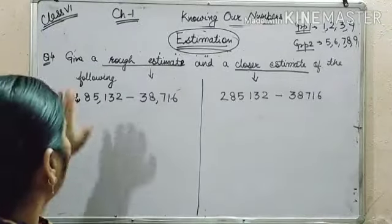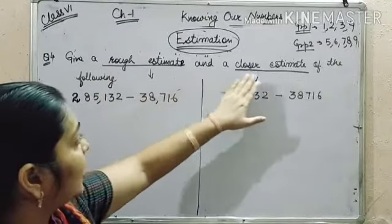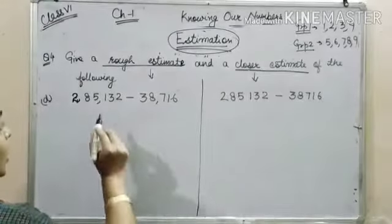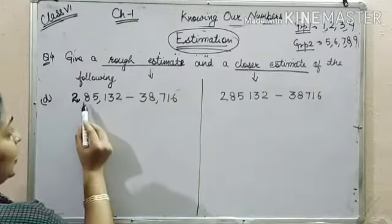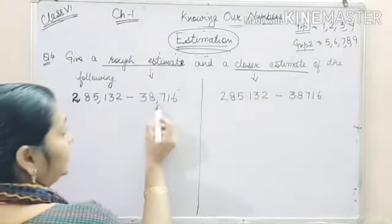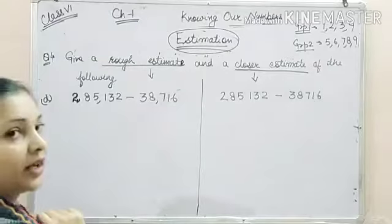Now we will learn how to give a rough estimate and a closer estimate of the following. In this the number is 2,85,132 minus 38,716.